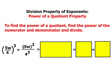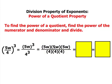Now you can write this problem out in a few ways. You can go ahead and expand it like this: 5w times 5w times 5w divided by 4 times 4 times 4.